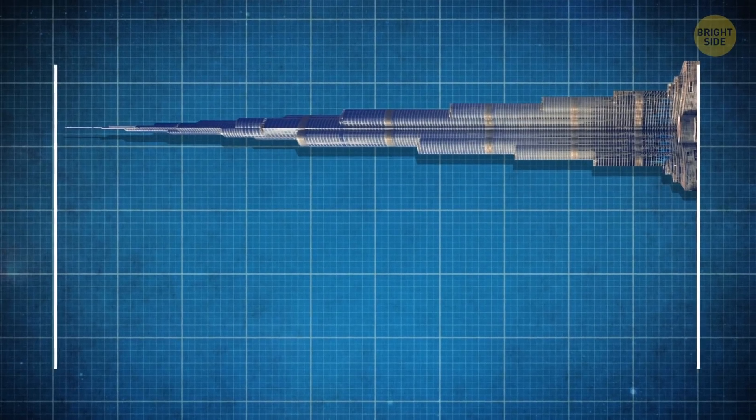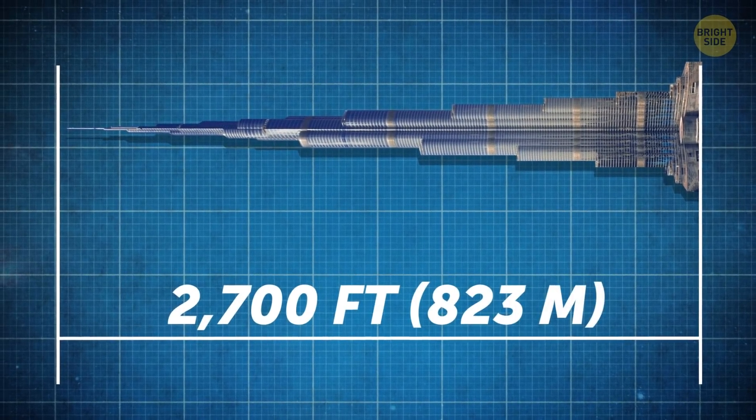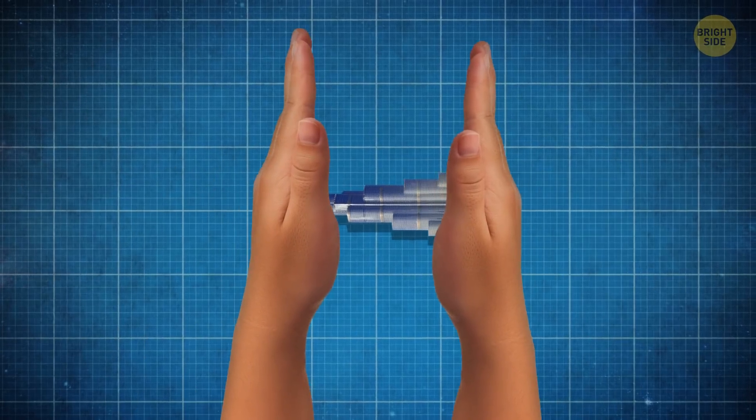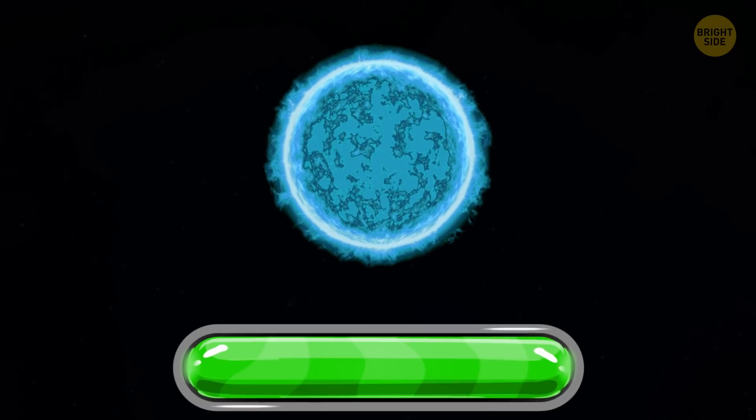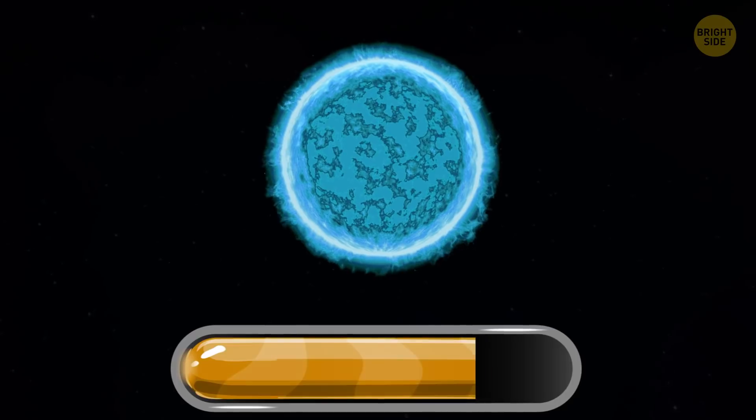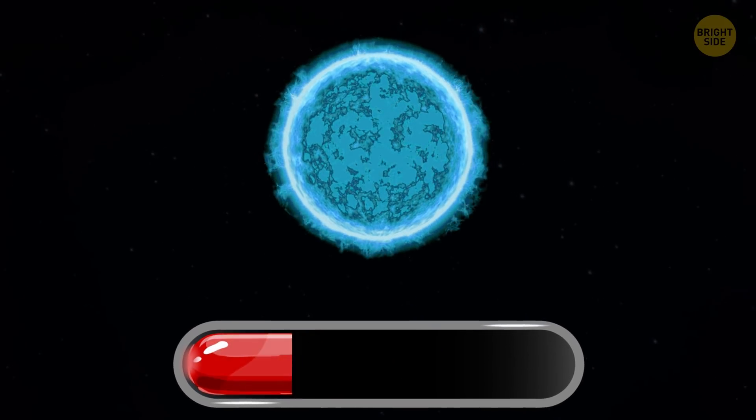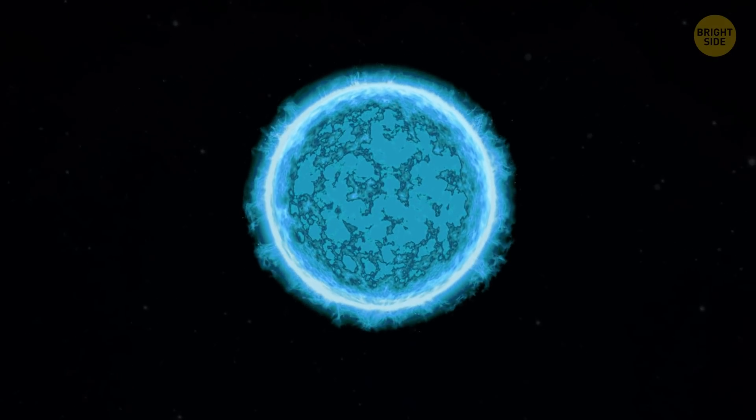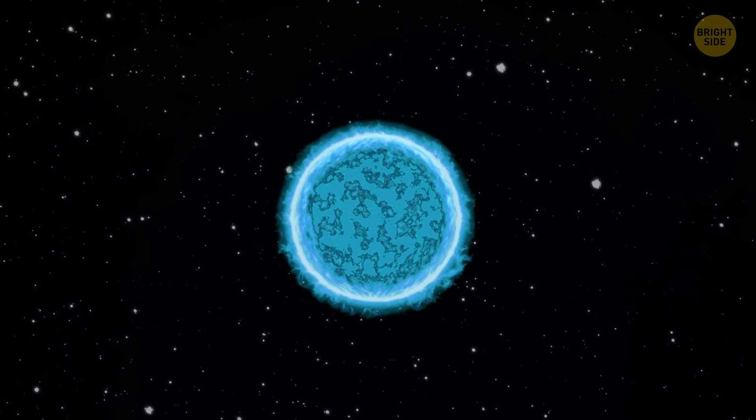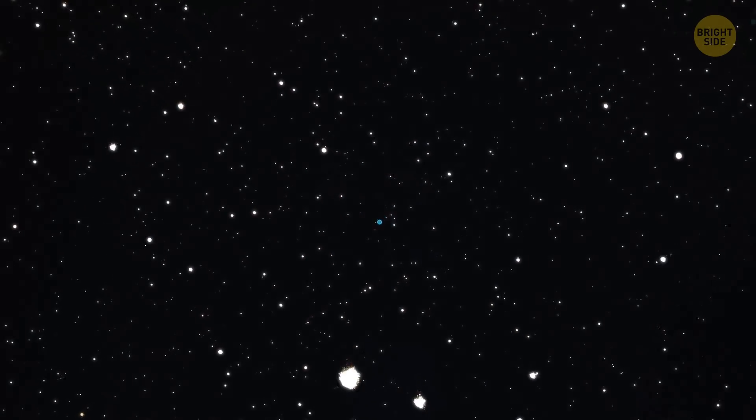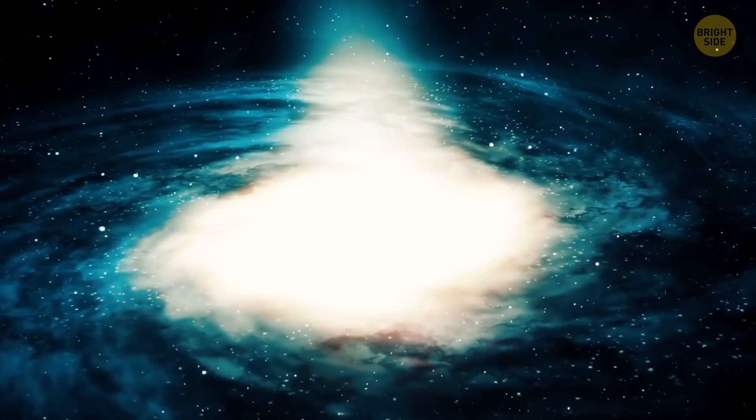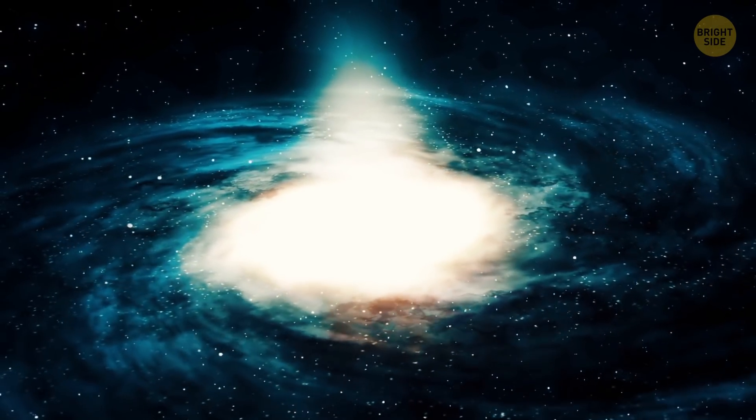It'd be like stuffing all 2,700 feet of the Burj Khalifa into an aspirin. Then energy starts to leave the fading object, finishing off the transformation into a neutron star. The amount of this energy is so great that it can be compared with the combined light emitted by all the stars in the observable universe.